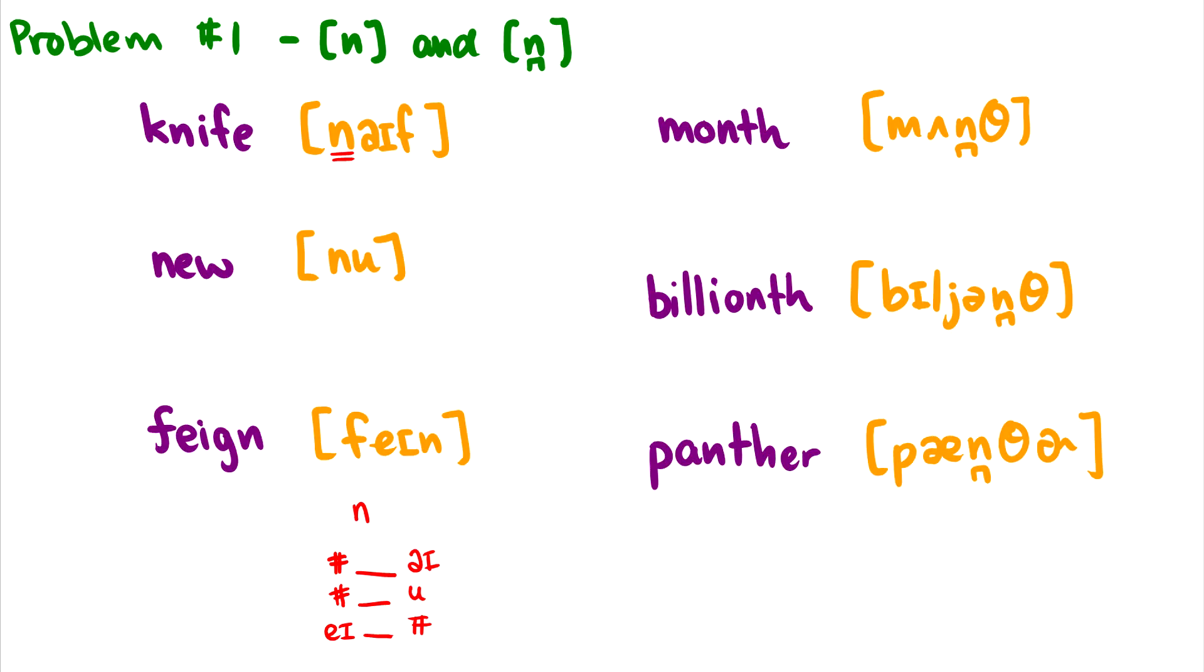Now what about the [n̪] that is dentalized? Well, if we make a little chart like this again, in the first word, it comes after an [ʌ], and before a [θ]. In the second word, it comes after a schwa, but before a [θ]. And in the third word, in panther, it comes after an [æ], and before a [θ]. So what's the common denominator in all of these? Well, it's that theta. It's that voiceless dental fricative. So that's what the common environment is.